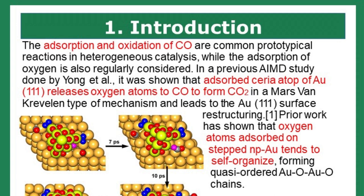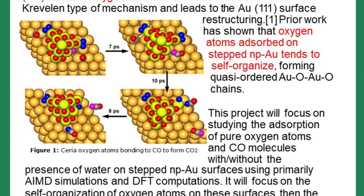Previous ab initio molecular dynamics studies done by Young et al. have shown that adsorbed species atop of gold Au(111) releases oxygen atoms to carbon monoxide to form carbon dioxide in a Mars-van Krevelen type of mechanism, and this leads to the Au(111) surface restructuring. Furthermore, prior work on stepped nanoporous gold surfaces has shown that oxygen atoms adsorbed on it self-organize into quasi-ordered gold-oxygen-gold-oxygen chains.